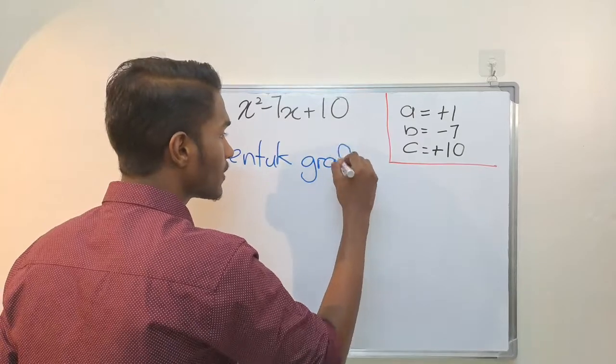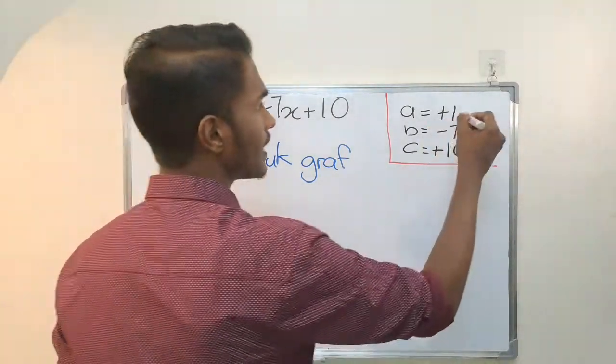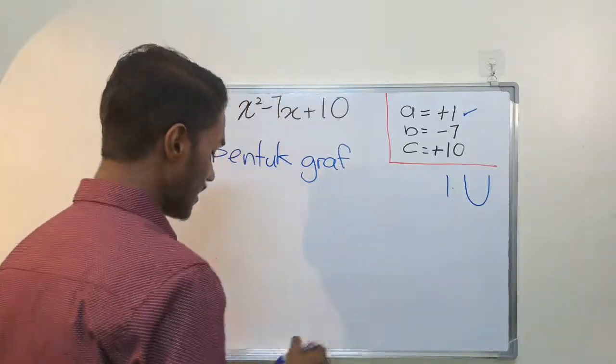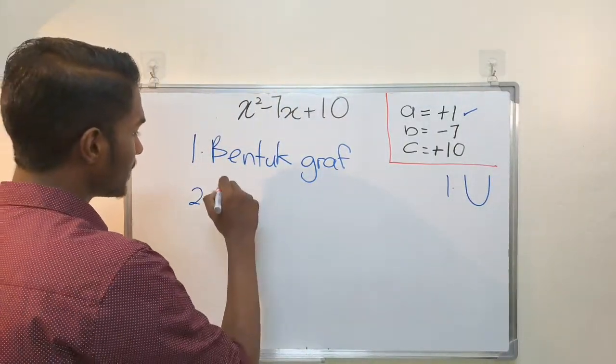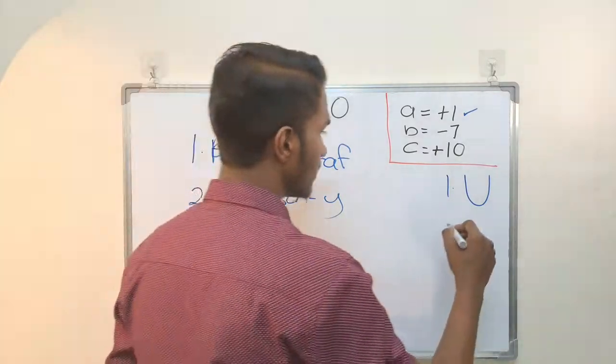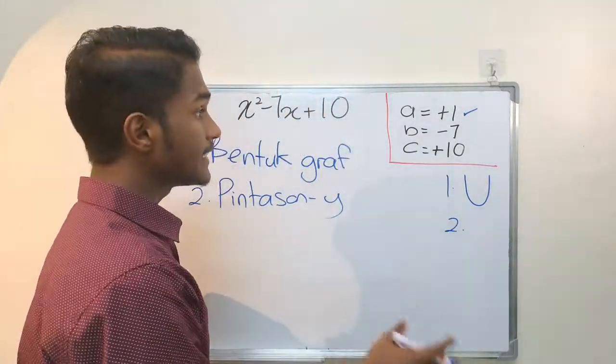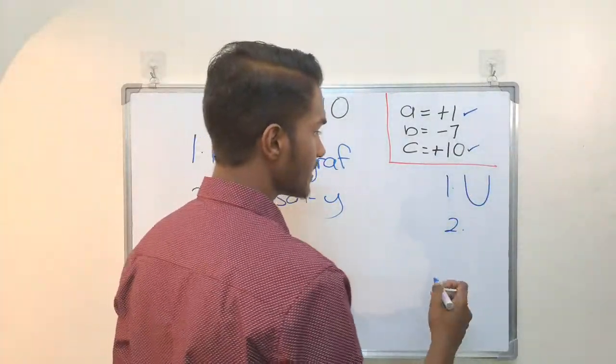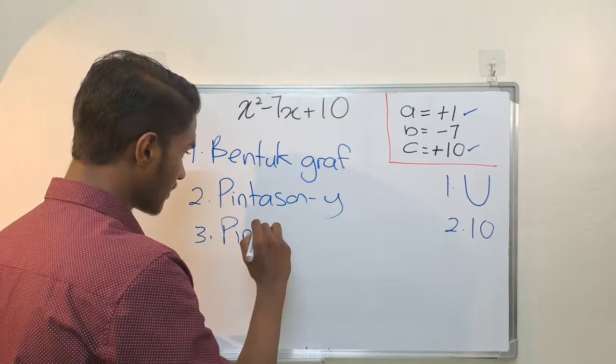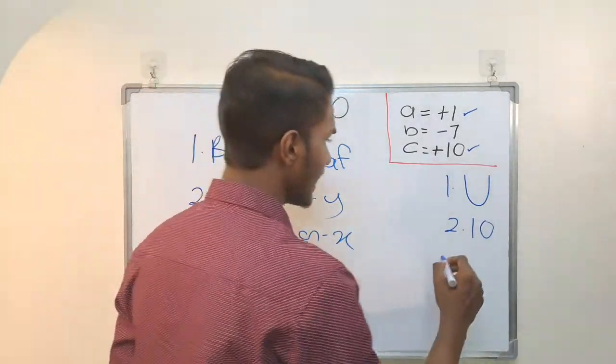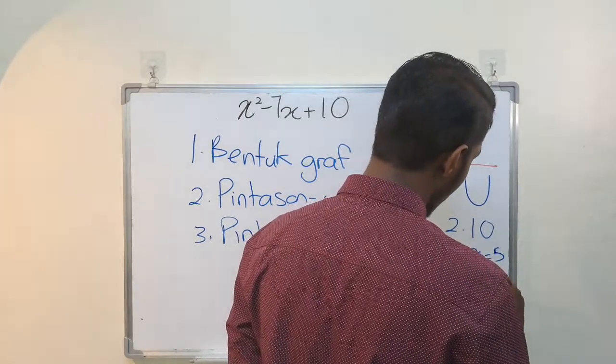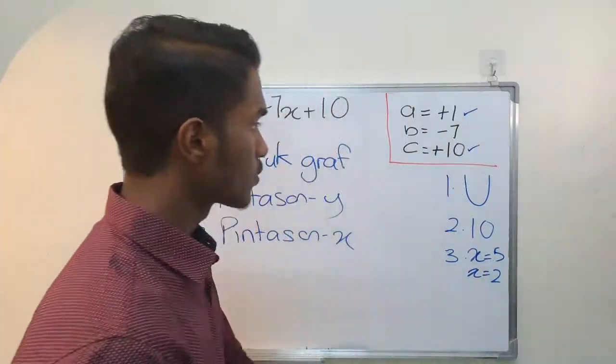The a value is positive, so positive. The c value is 10. So third step, x-intercepts are x equals 5 and x equals 2.